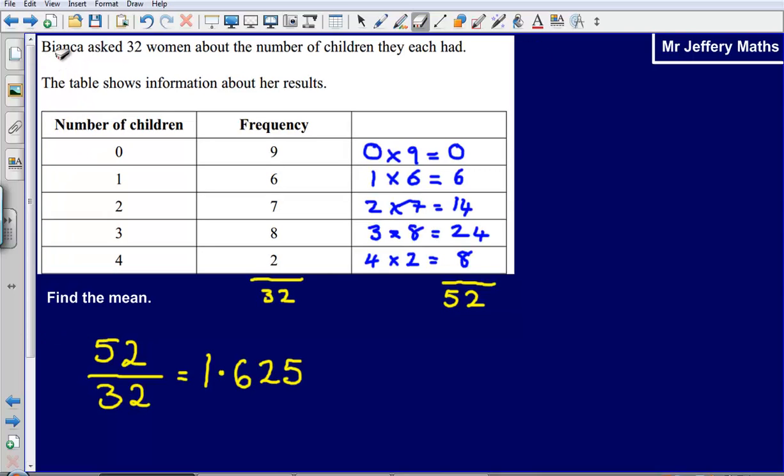So here are the answers. Bianca asked 32 women about the number of children they had. So all that we've done here is we've taken our values that could have been our answers. 9 people said 0, 6 people said 1, and we've just multiplied our values here by the frequency. So 0 times 9, 1 times 6, 2 times 7.